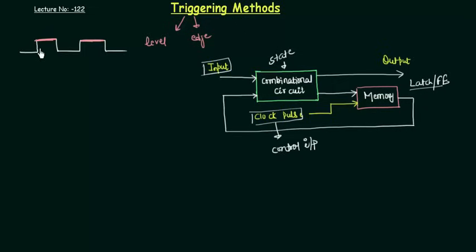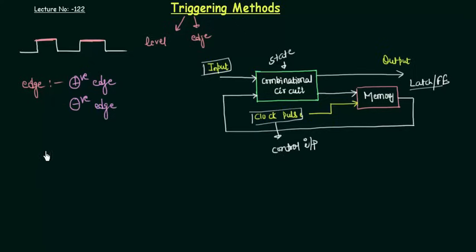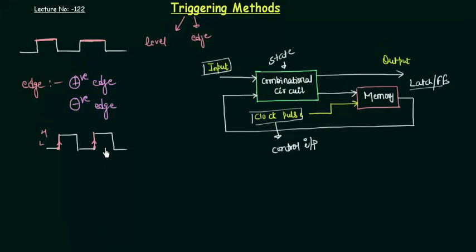Now in edge triggering, it is of two types: the first is positive edge triggering and the second is negative edge triggering. So let's look at a clock to understand what positive edge triggering means. This memory element will trigger when the clock goes from low to high. At this transition point — from low to high — there will be a change in the memory element; it will switch from one state to another. Similarly, whenever the clock is going from low to high again, there will be a change. This is your positive edge triggering.